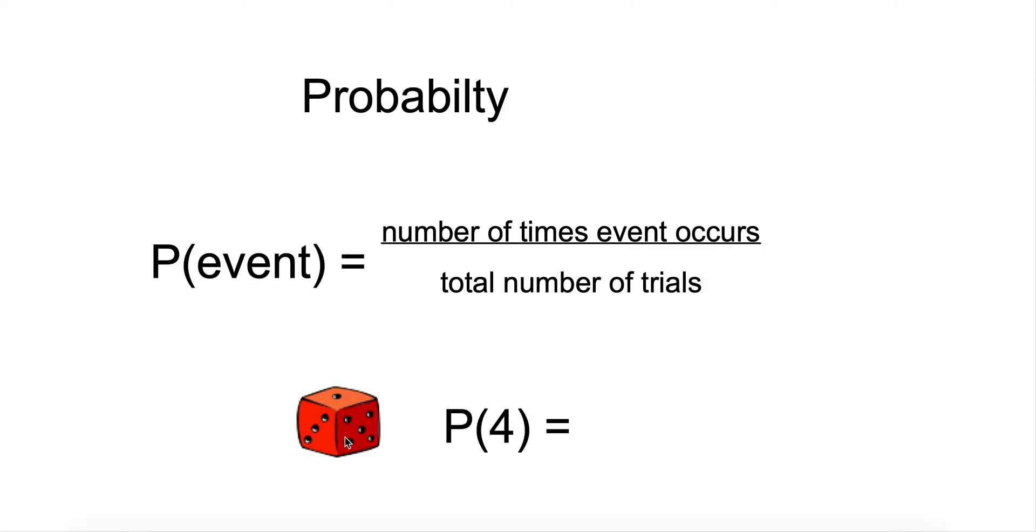Here we have a die with six sides, so that would be our total number of trials. The P with the parentheses around the four means what's the probability of getting a four? Our top number will be one, since there's only one side of that die that has a four on it, and the total number of outcomes we can get are six.